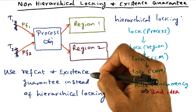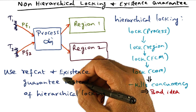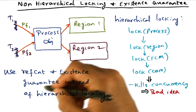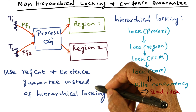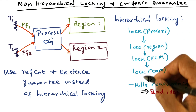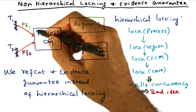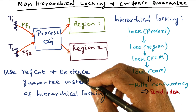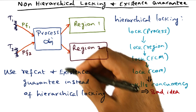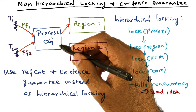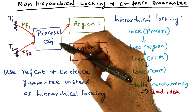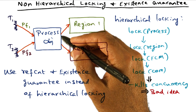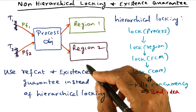What the reference count and the existence guarantee is giving you is the same facility without doing the hierarchical locking that was what we really wanted. What we really wanted in hierarchical locking is the existence guarantee of this process object — to guarantee the integrity of this object. We're getting that by associating a reference count and making sure that this particular object is not gotten rid of until the reference count goes to zero. So we're achieving the effect of hierarchical locking without losing concurrency for operations that can go on in parallel.